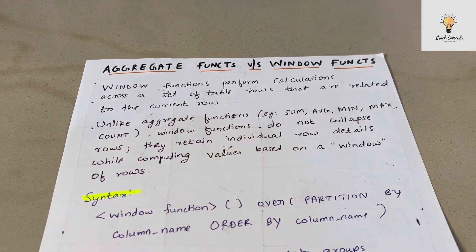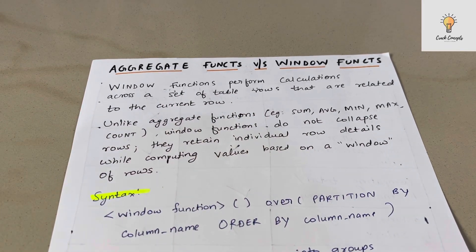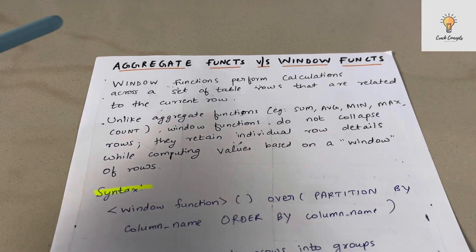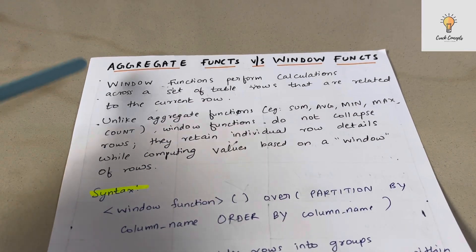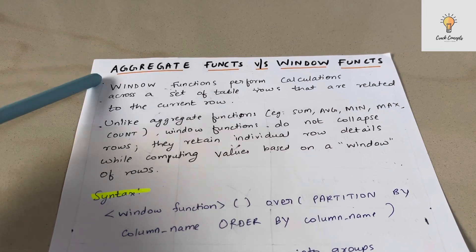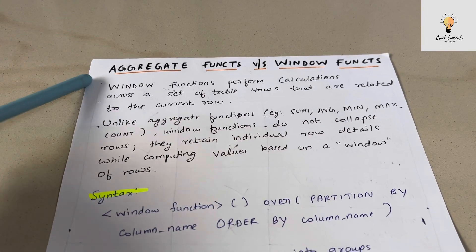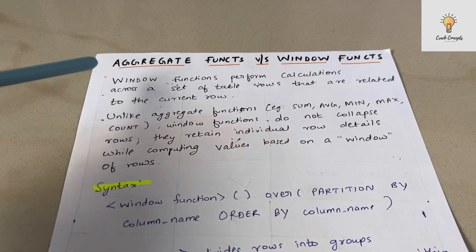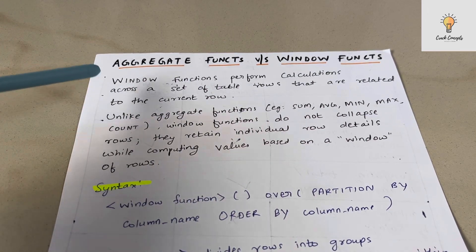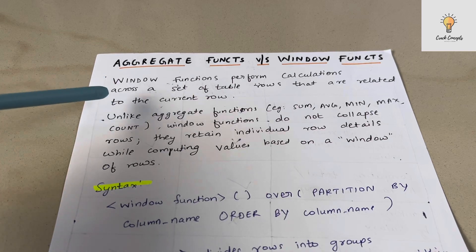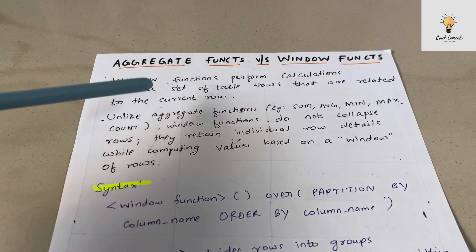Hello everyone, welcome back to another video on Crack Concepts. In today's video we will be discussing the difference between aggregate functions and window functions. Window functions perform calculations across a set of table rows that are related to the current row.